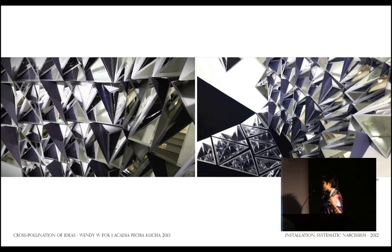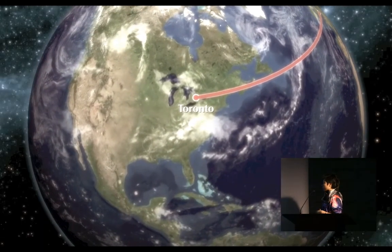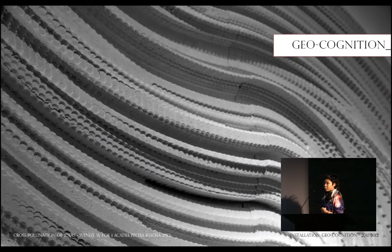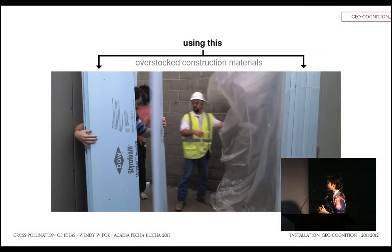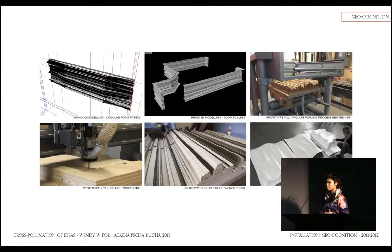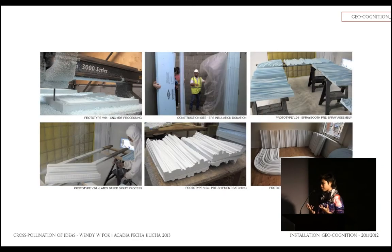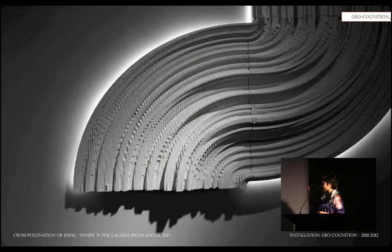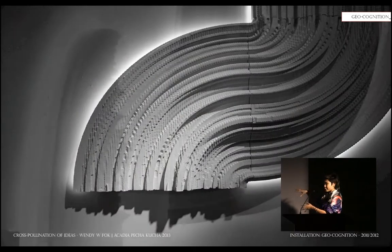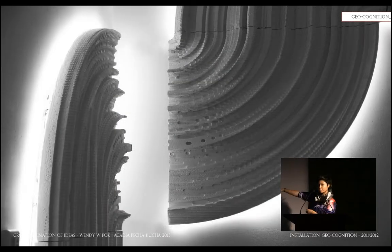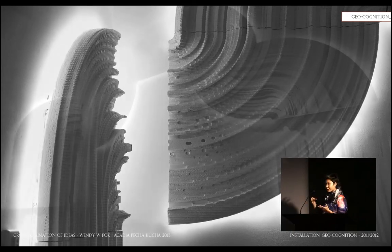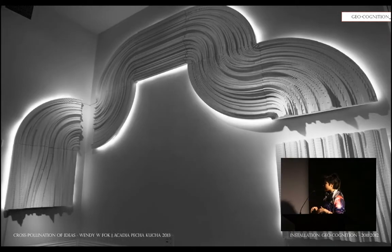Moving on, back to Toronto. This is for the design festival last year. We were working with overstock materials with a contractor. The experimentation — we were very optimistic thinking we could use different types of form finding with CNC and vacuum forming — did not work. So we went back to the drawing board, and actually the shadows you see represent different cities. I could show you more detail later on if you'd like.